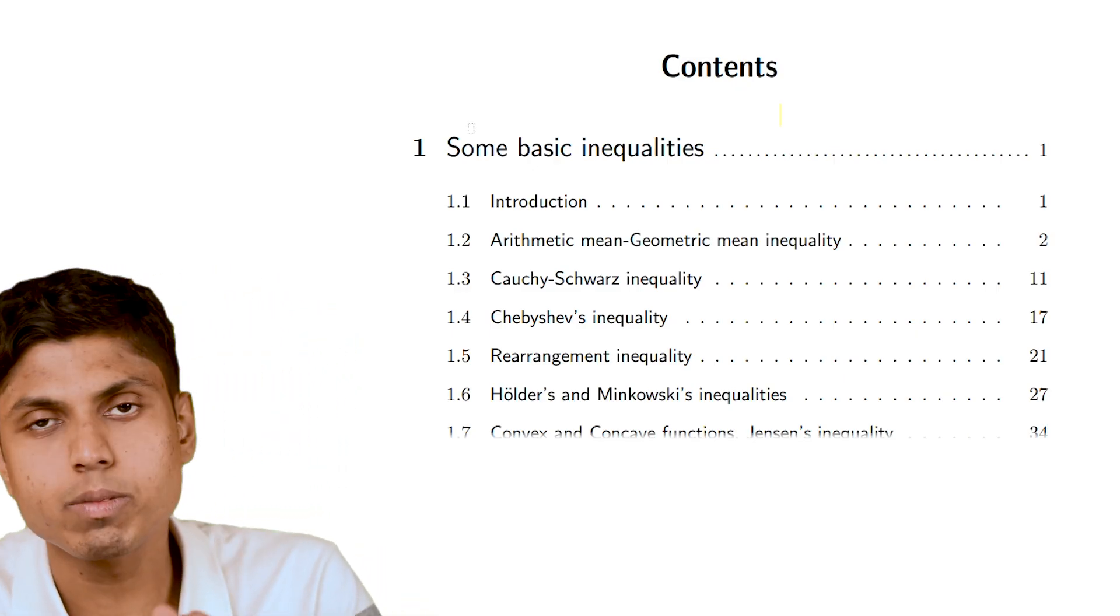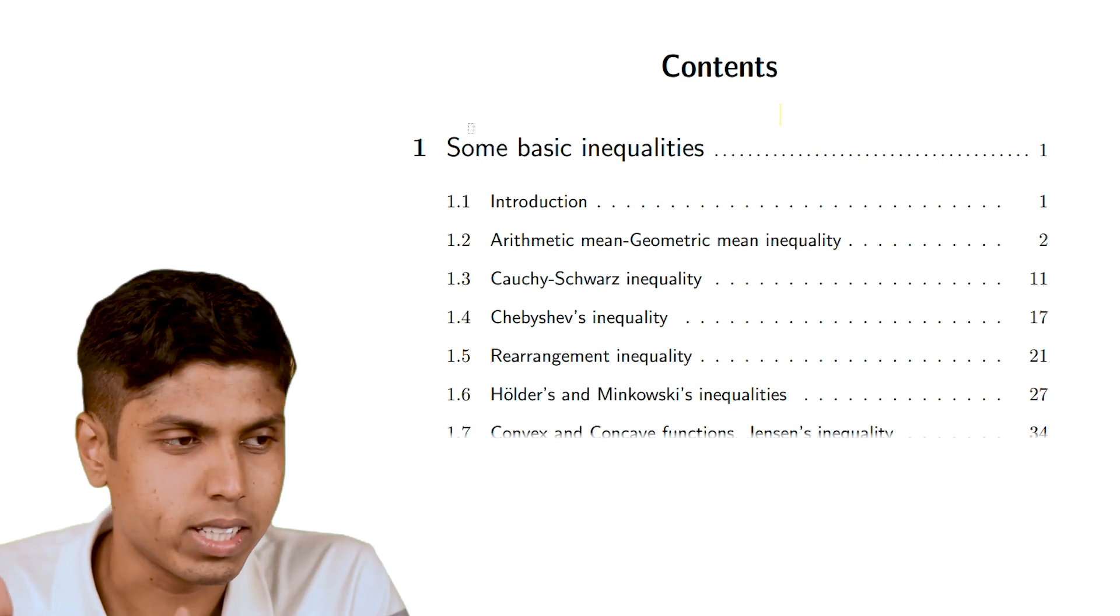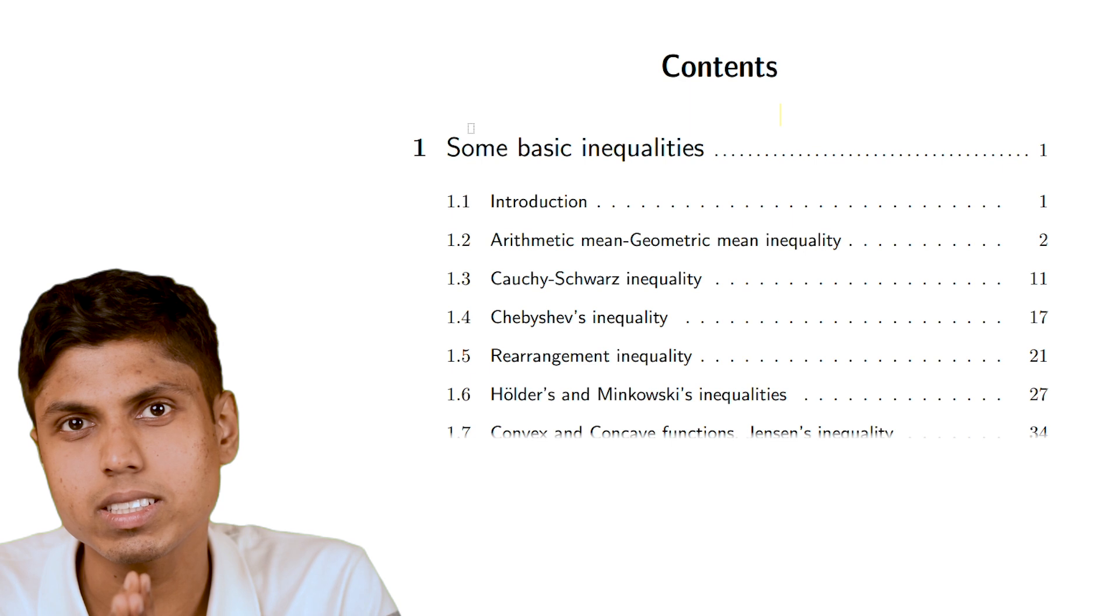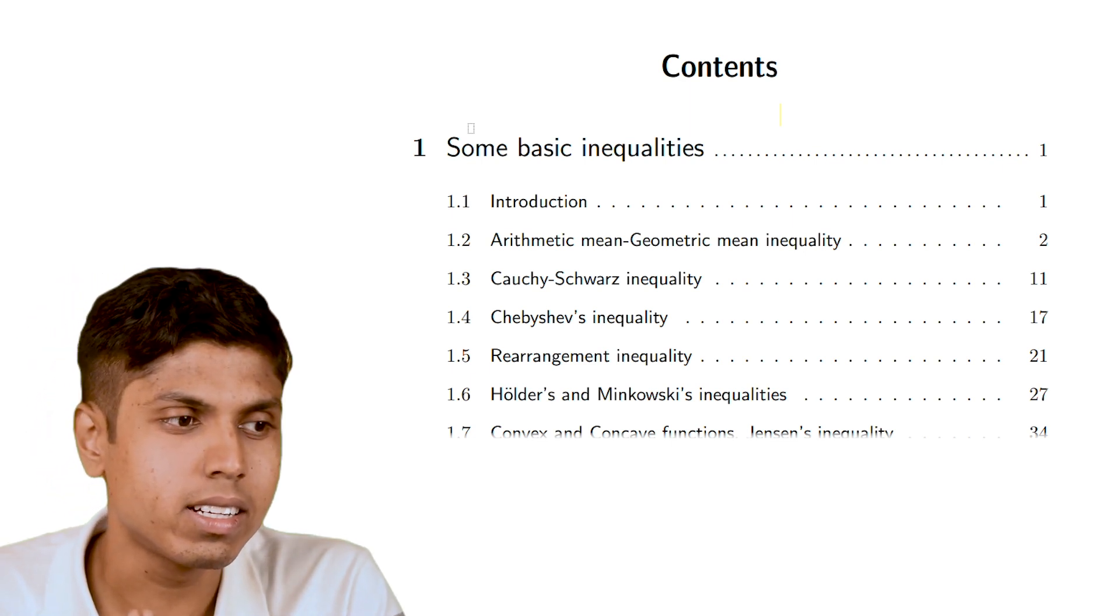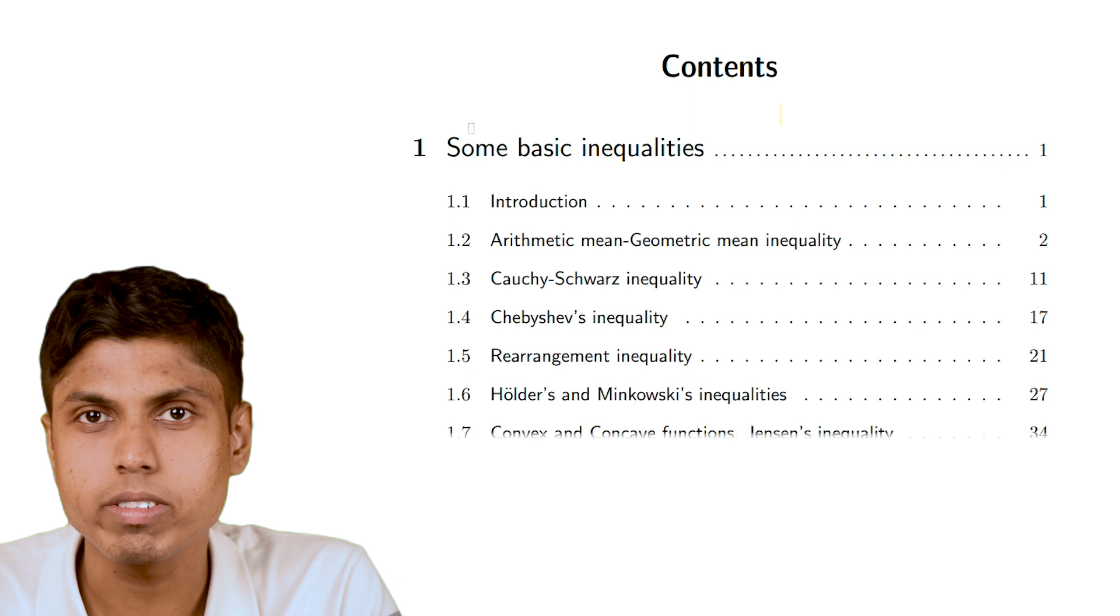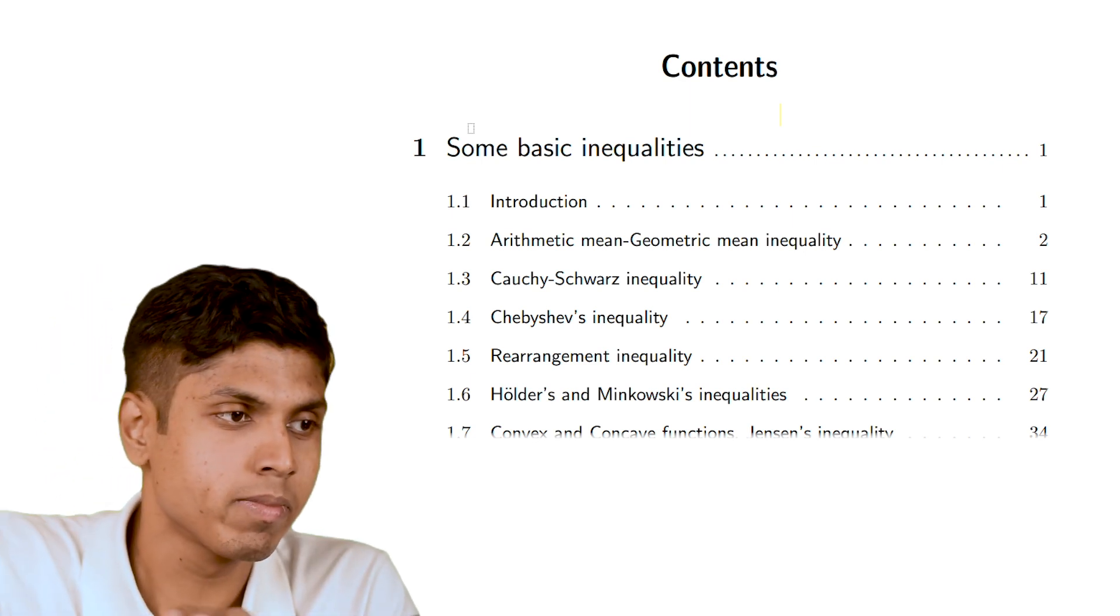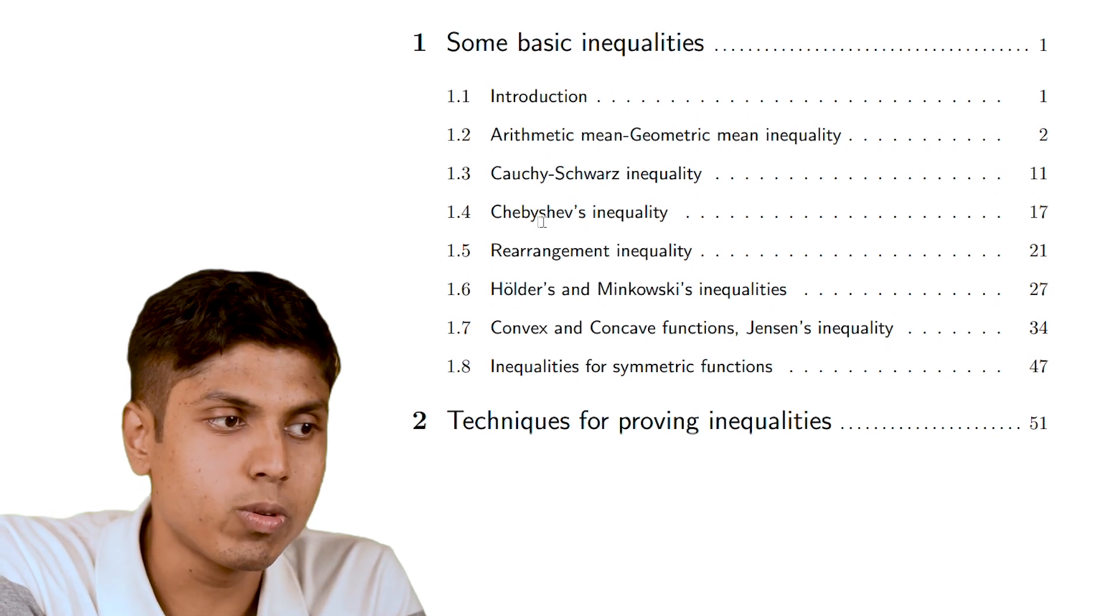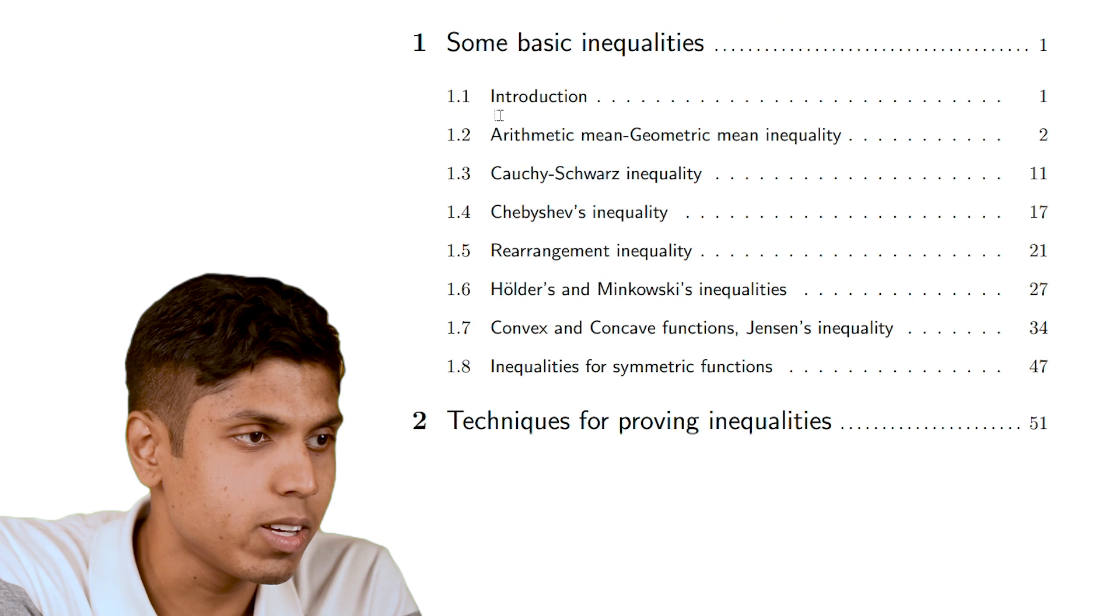So this book has six main topics. First, it starts with basic inequalities like AMGM, Cauchy-Schwarz, Rearrangement Inequalities. These are some preliminary ideas for Olympiads and other competitive Olympiad level examinations all over the world. So you have to know these inequalities. If you are not aware of them, just go ahead and solve these inequalities.